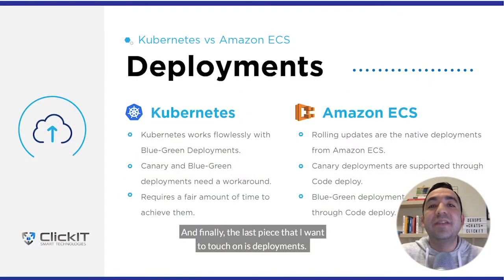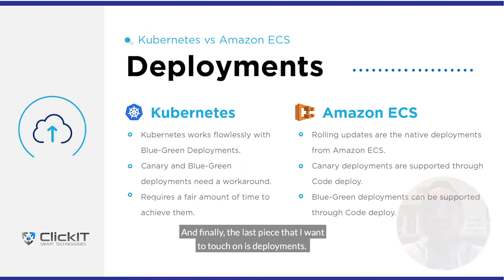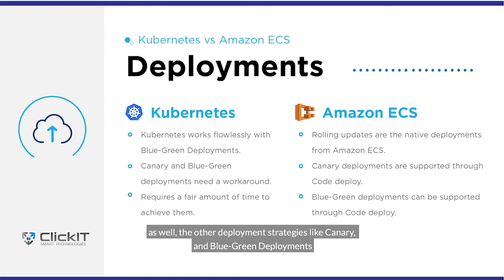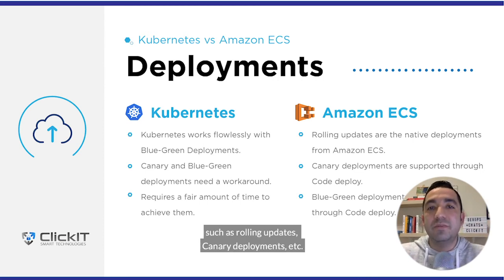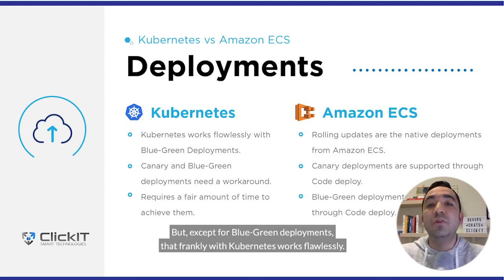Finally, the last piece I want to touch on is deployments. With Amazon ECS, the native deployment system is rolling updates. Other deployment strategies like Canary and Blue-Green deployments can be incorporated into your CI/CD process, but with the help of Amazon CodeDeploy. On the other hand, Kubernetes per se supports multiple deployment systems such as rolling updates, Canary deployments, etc. — and Blue-Green deployments with Kubernetes work flawlessly.